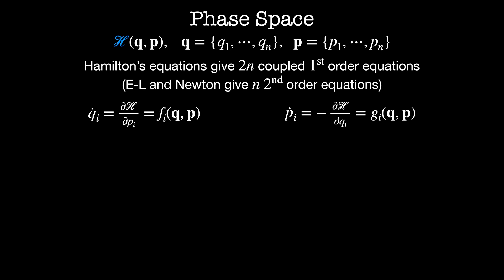These aren't always easy to solve. But let's see what we can do with Hamilton's equations. We can write each of these as vector equations, where the rate of change of the generalized vector q is given by some vector function f, which is itself a function of the q's and the p's. Likewise, the generalized momenta evolve according to some vector function g, which is again a function of q's and p's.